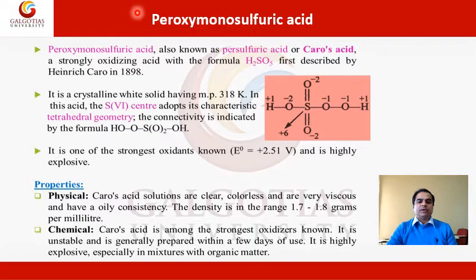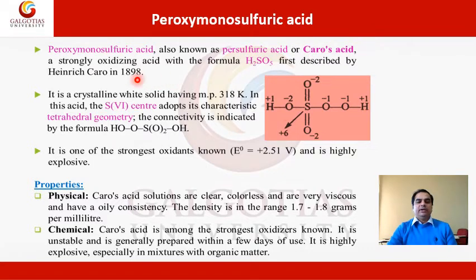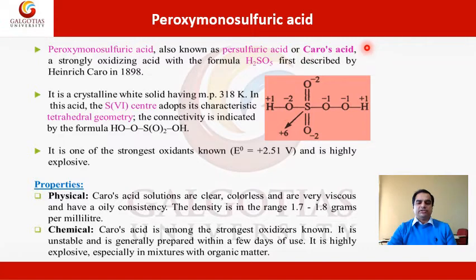Now let us discuss the first peroxyl compound of sulfur, that is peroxy monosulfuric acid. This peroxy monosulfuric acid is also referred to as persulfuric acid, and also named as Caros acid, which is an important peroxo compound of sulfur. It can also act as a strongly oxidizing agent, having the chemical formula H2SO5, which was first described by the scientist Heinrich Caros in 1898. On the basis of the name of this scientist, we can also call this compound Caros acid.